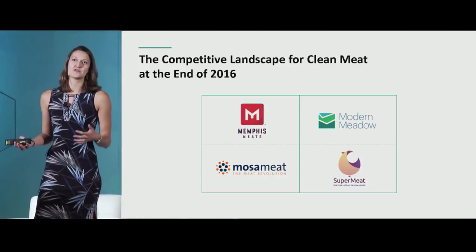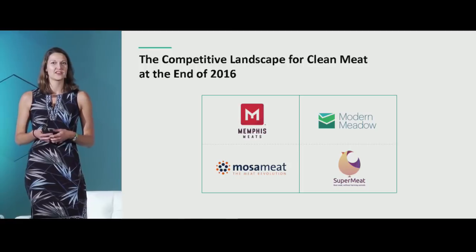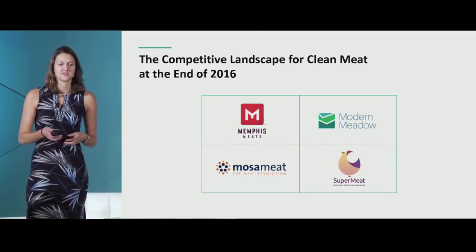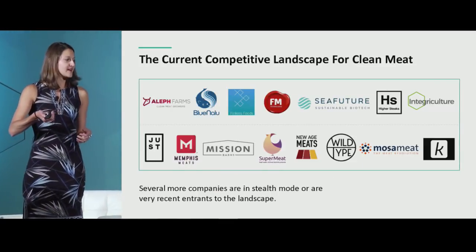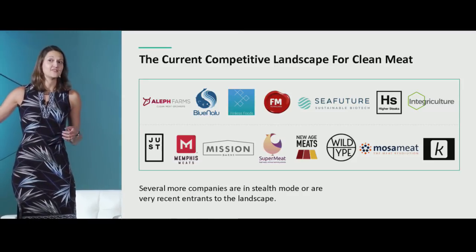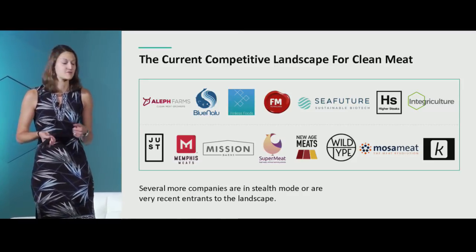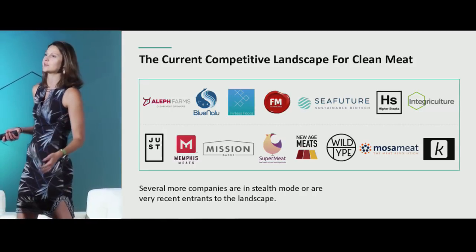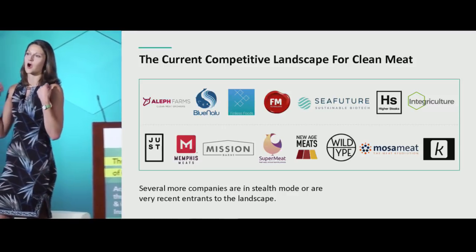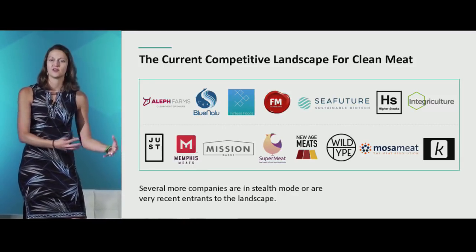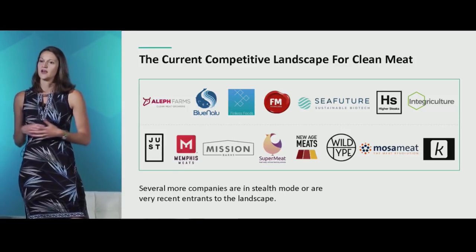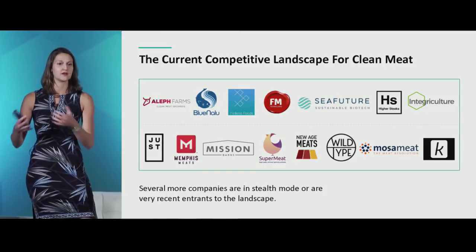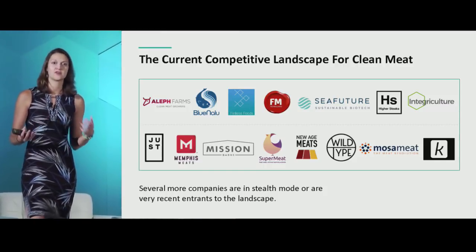To give you a sense of the growth: when we looked at this landscape at the end of 2016 — less than two years ago — there were arguably about four companies in this space. As of now, this is not even an exhaustive list of new startups that have emerged tackling this problem, each in slightly different ways. What's particularly exciting is that companies are starting to specialize — some saying their core competency is scaffolding, others in cell adaptation and modification. We're getting a large enough ecosystem for cross-licensing, collaborations, and building off each other's work collaboratively rather than competitively.